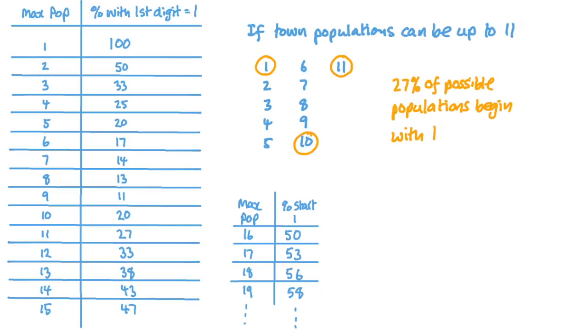Then, as we include towns with 11, 12, 13 people, and so on, up to 19, the percentage of potential town populations beginning with one increases up to 58%. If towns have random populations between one and 19, then there are 11 ways to get a first digit of one out of 19 different possibilities.